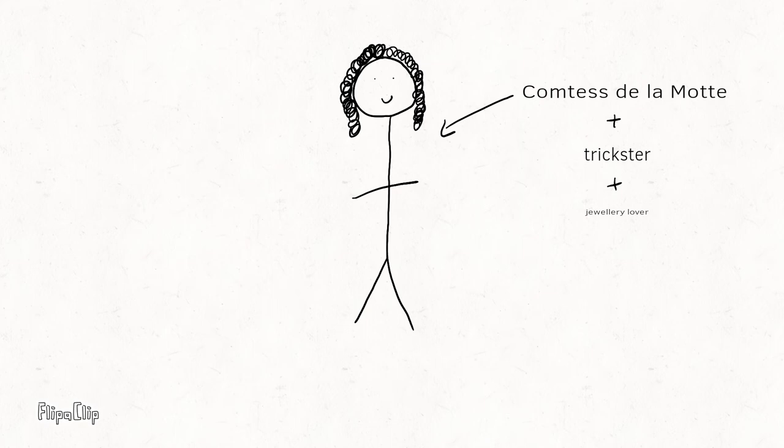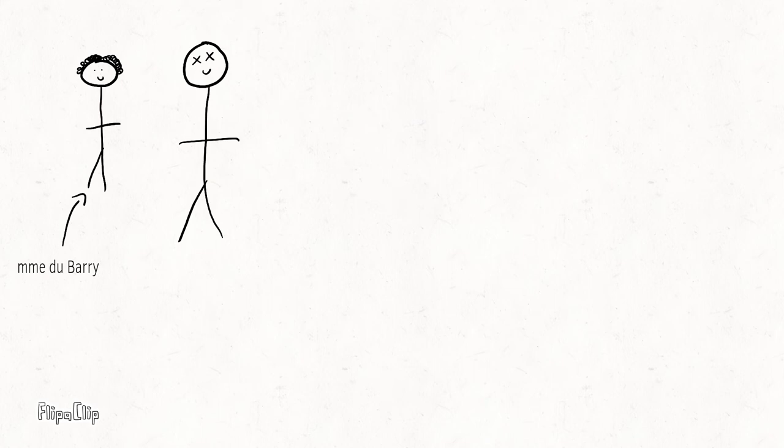The necklace was originally commissioned under Louis XV for his favourite mistress, Madame du Barry, though he died and she was exiled before any payment was received and the necklace was accepted.